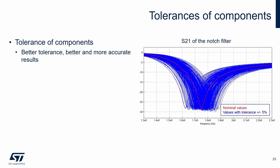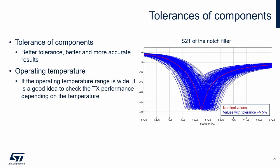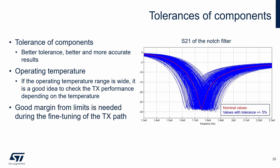To have good and stable parameters of the transmitter path, components with good tolerance are recommended. Here is the simulation of the notch filter — the red curve is based on nominal values and the blue curves are based on values with a tolerance of ±5%. The difference may be quite large; attenuation of the second harmonic may differ by several dB. If the operating temperature range is wide, it is a good idea to check the transmitter performance depending on temperature. Some variations always occur, so it is necessary to have a good margin from the certification limits.